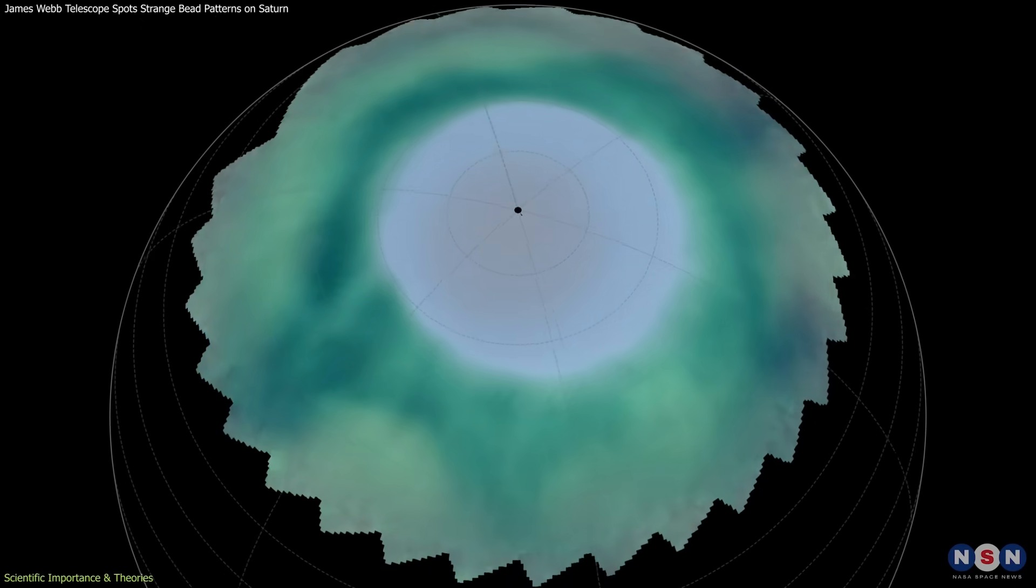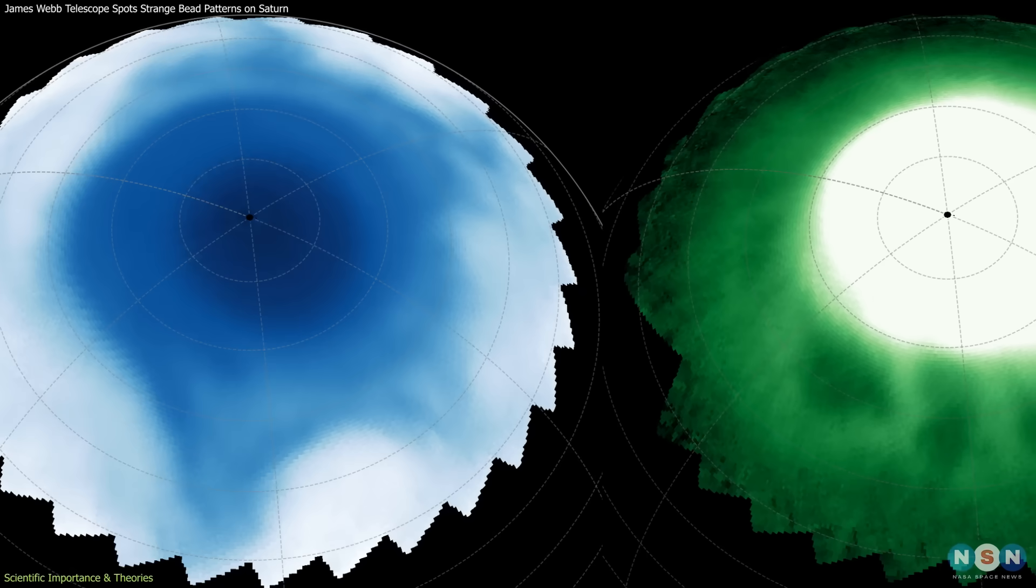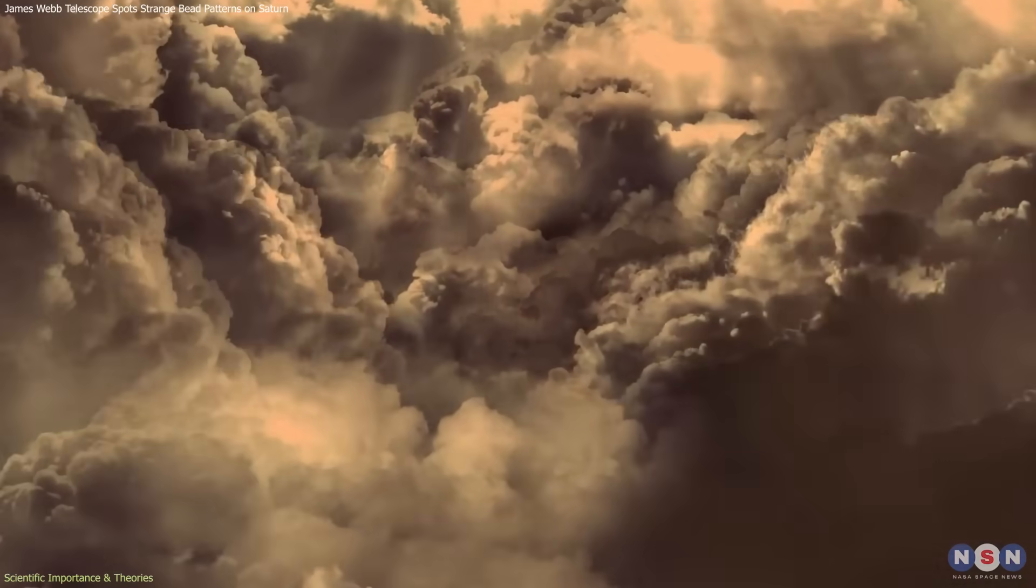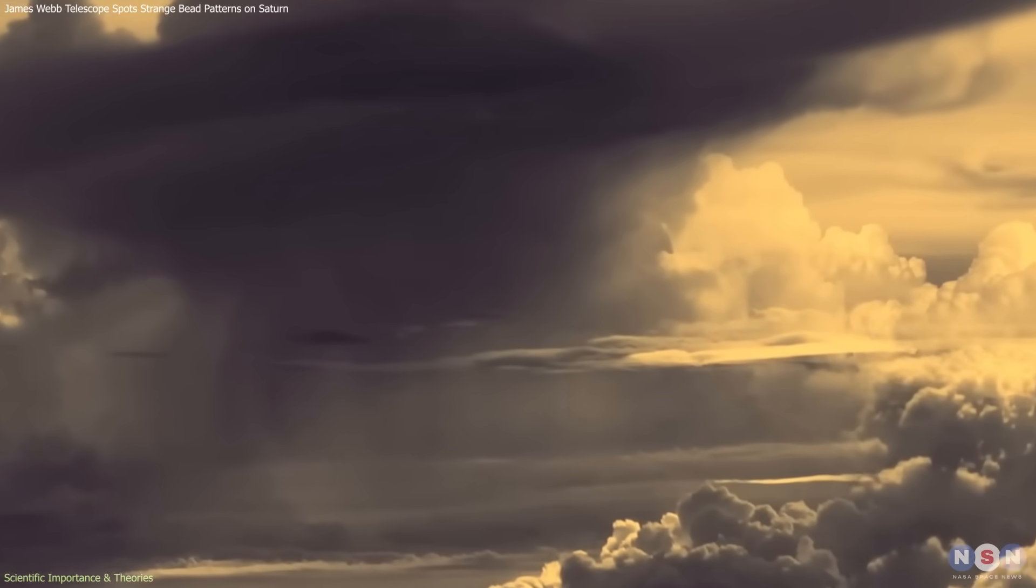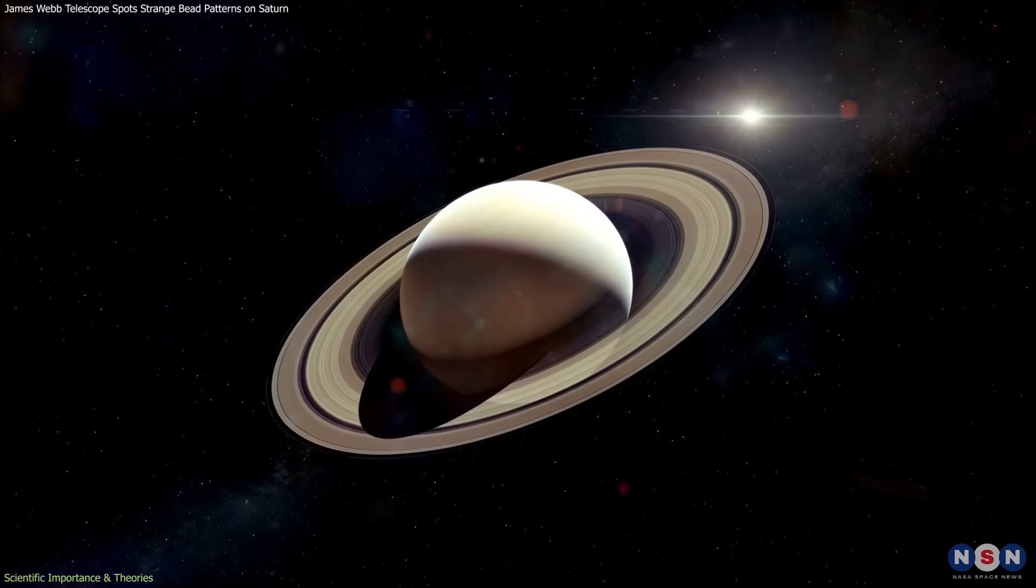The apparent alignment between beads and star arms is the most intriguing element. If the two layers are connected, it would mean energy or motion is moving vertically through them, linking the ionosphere to the stratosphere. That would be unprecedented.